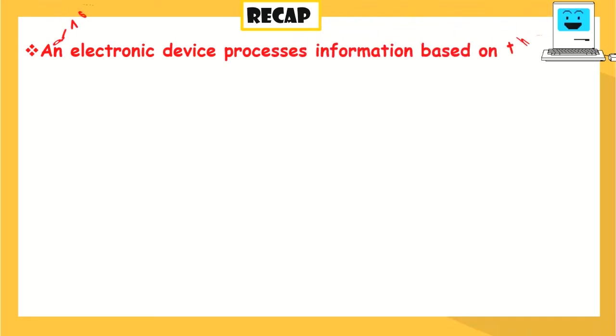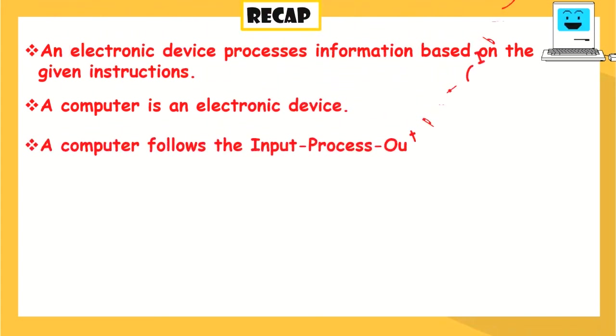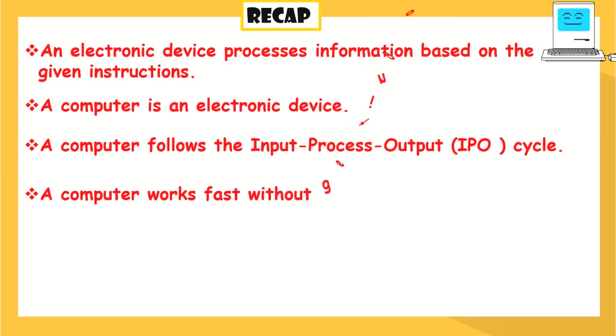Recap: An electronic device processes information based on the given instructions. A computer is an electronic device. A computer follows the input-process-output IPO cycle. A computer works fast without getting bored and tired. A computer gives correct answers and stores a lot of information.